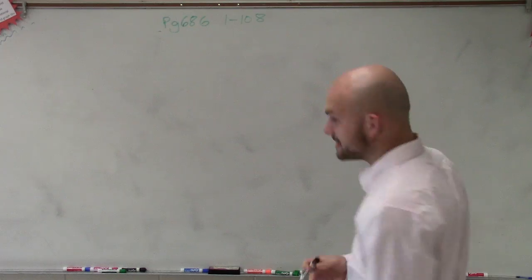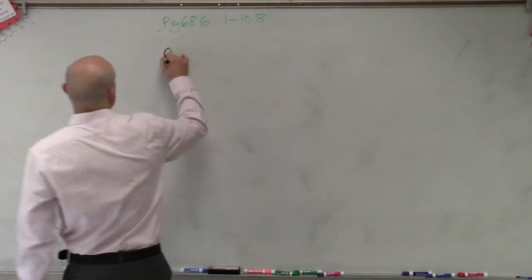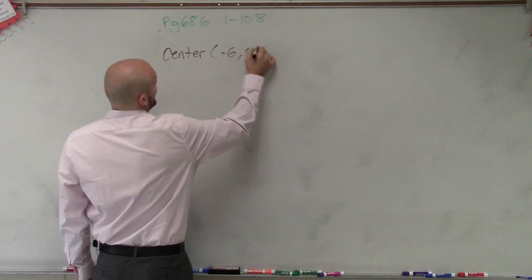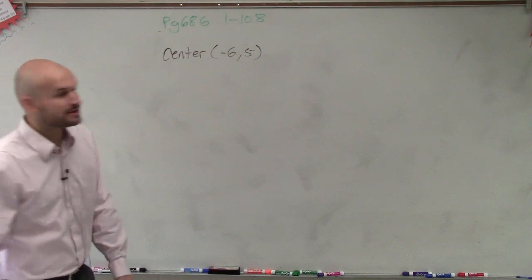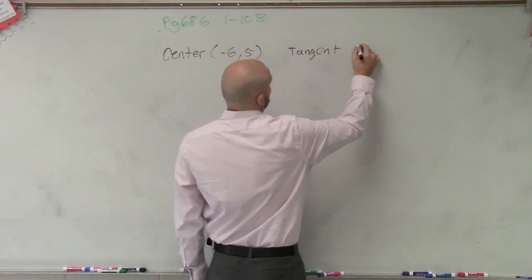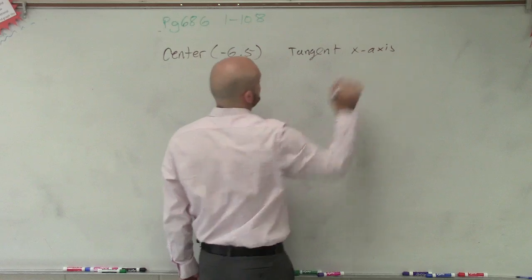What we have in this problem is we have a center at negative 6, 5. And we know that the circle is going to be tangent to the x-axis.